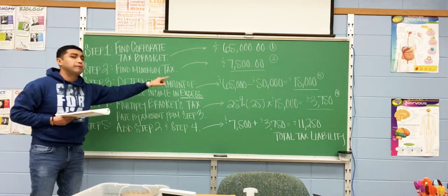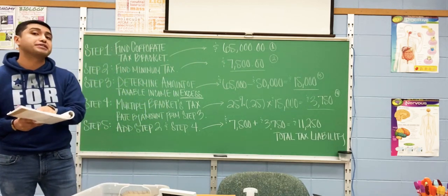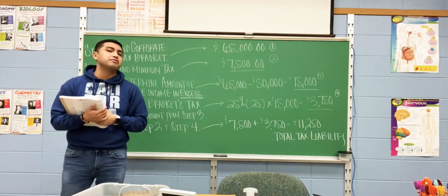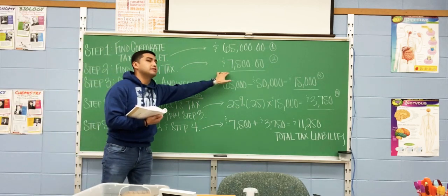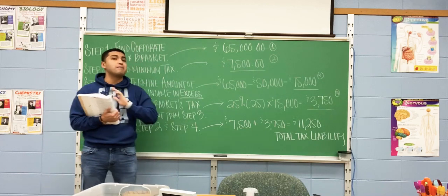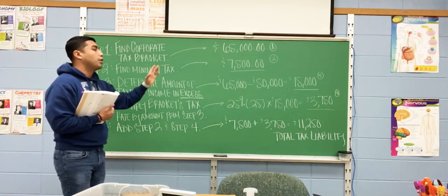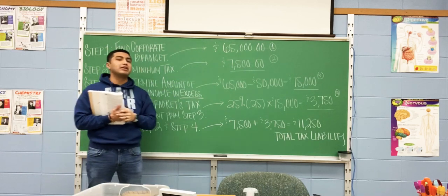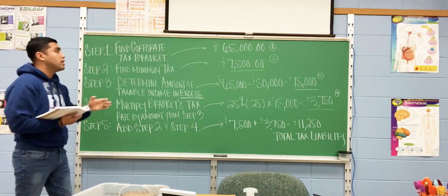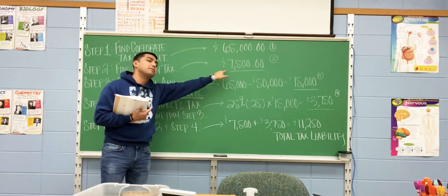Step two says find the minimum tax. Once you've located your tax bracket — which is the second one — right next to it on the liability side under calculation, you're going to have an amount. I'm looking at it: it says $7,500. This is the minimum tax. No matter the circumstance, this is the minimum they have to pay based on their income bracket. You have to locate that number — it is right there under calculation next to your bracket.